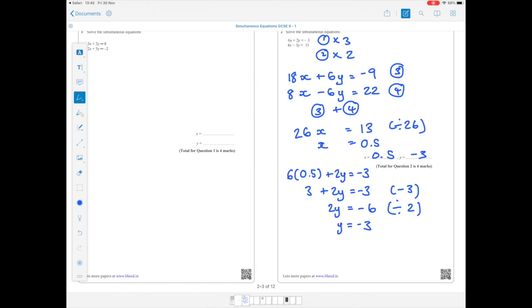And now let's double check our answer. So substituting into equation 1, so 6 lots of X, so 6 times 0.5, plus 2 lots of Y, which is minus 3. What does that equal? Well, it equals minus 3, which agrees with equation 1, so I know my answer is right.